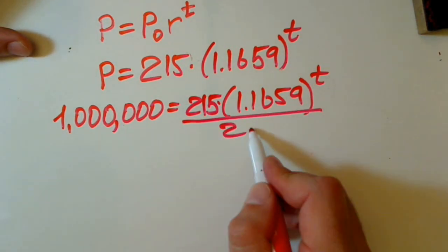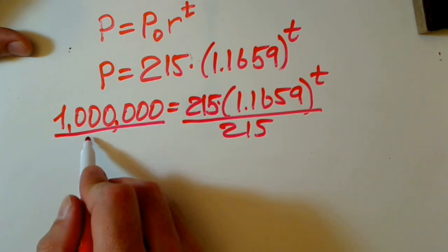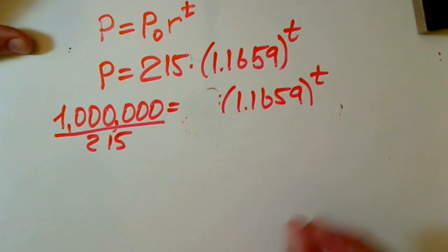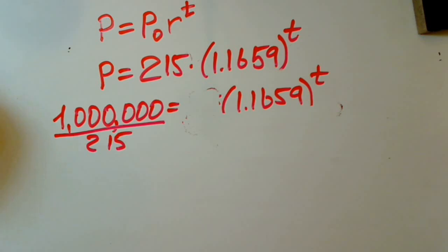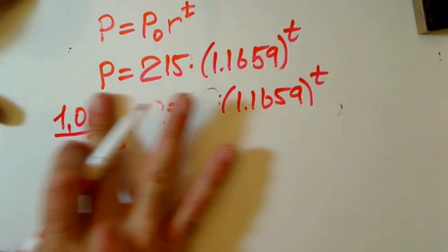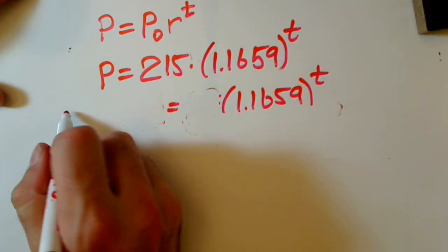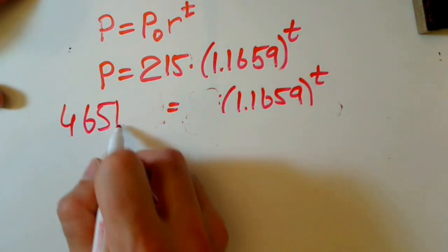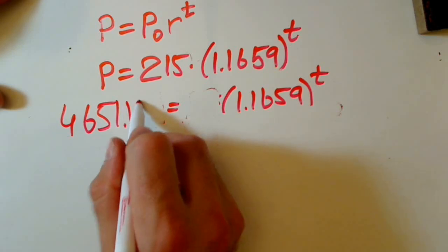First of all, we divide it by 215 above sides, and 215 cancels. And we have 1 million divided by 215, and it's approximately 4651.163.